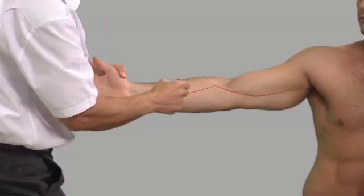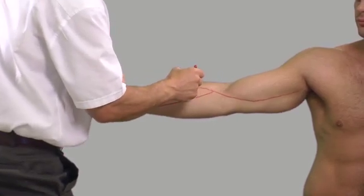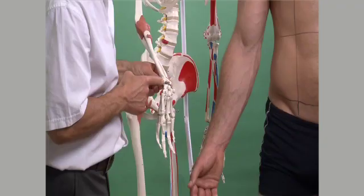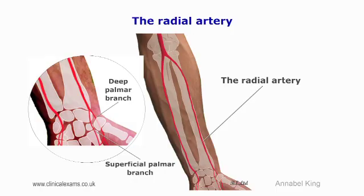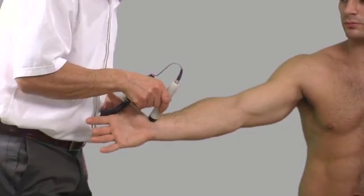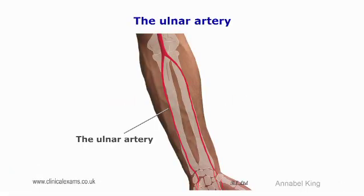The radial artery divides just distal to the antecubital crease to form the radial and ulnar arteries. At the wrist, the radial artery is easy to palpate just anterior to the styloid process of the radius. The radial artery can again be palpated over the dorsal aspect of the hand within the anatomical snuff box, as it lies over the lateral border of the scaphoid.